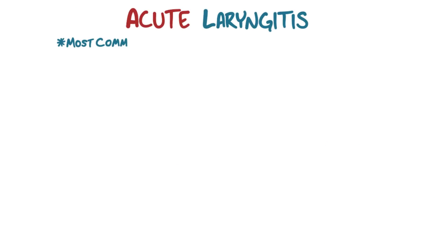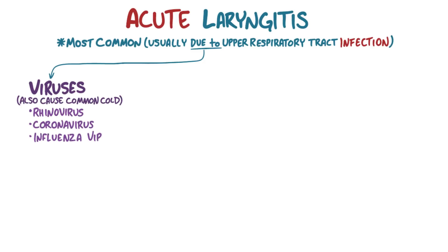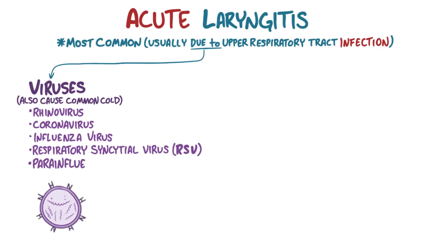Acute laryngitis is most common, and it's usually due to an upper respiratory tract infection, most often due to a virus. These viruses are the same ones that cause a common cold, like rhinovirus, coronavirus, influenza virus, respiratory syncytial virus, or RSV for short, and parainfluenza virus.